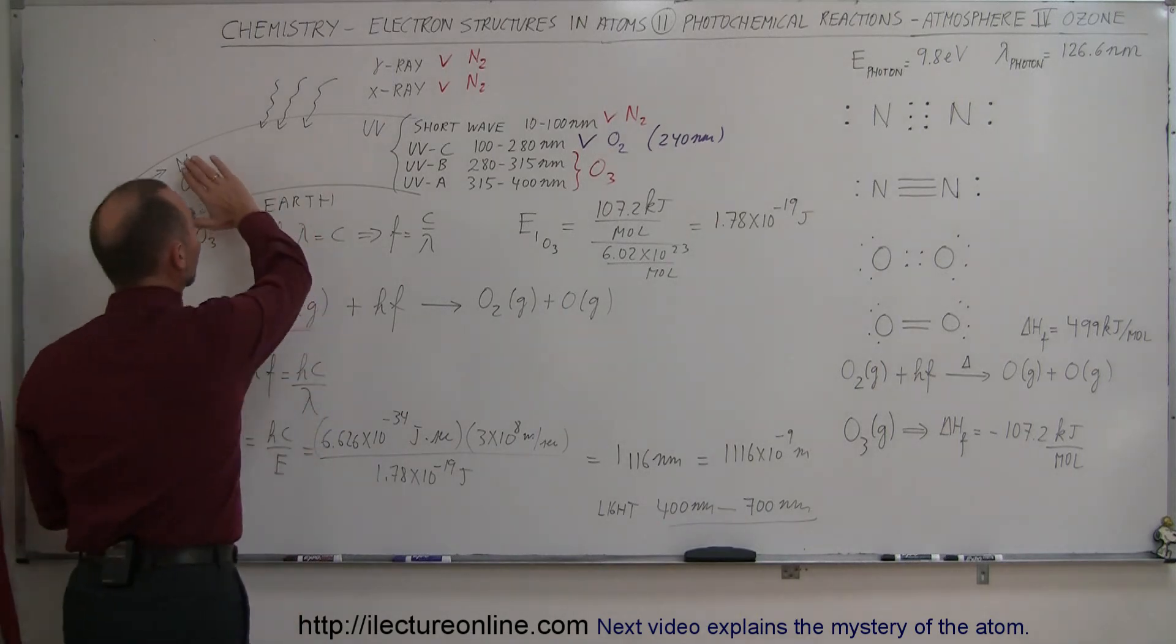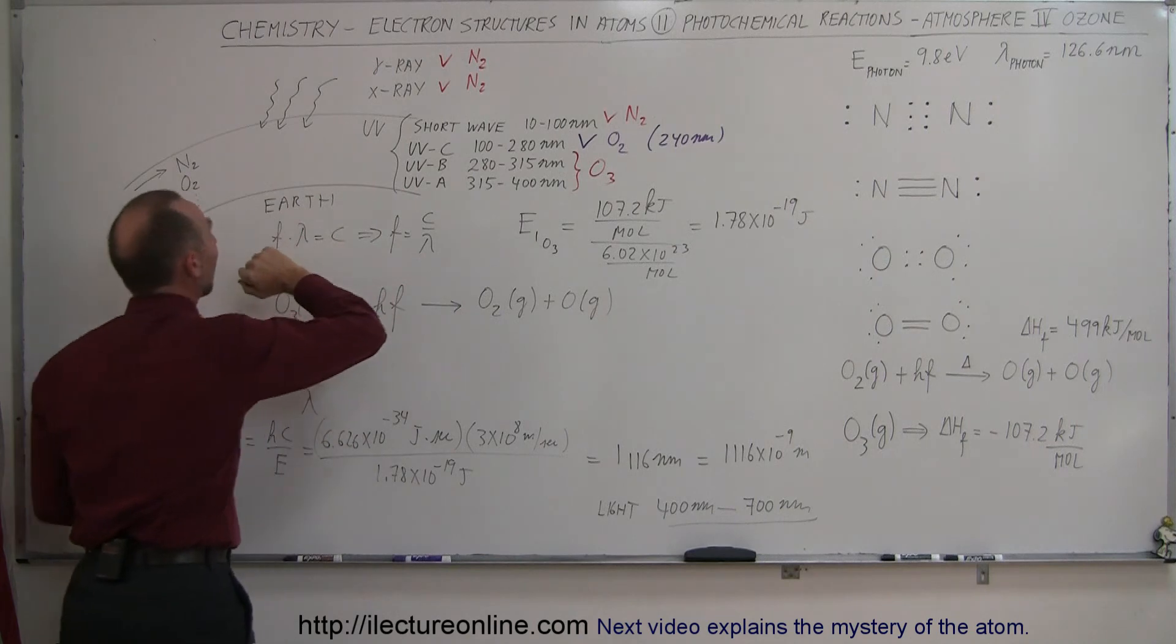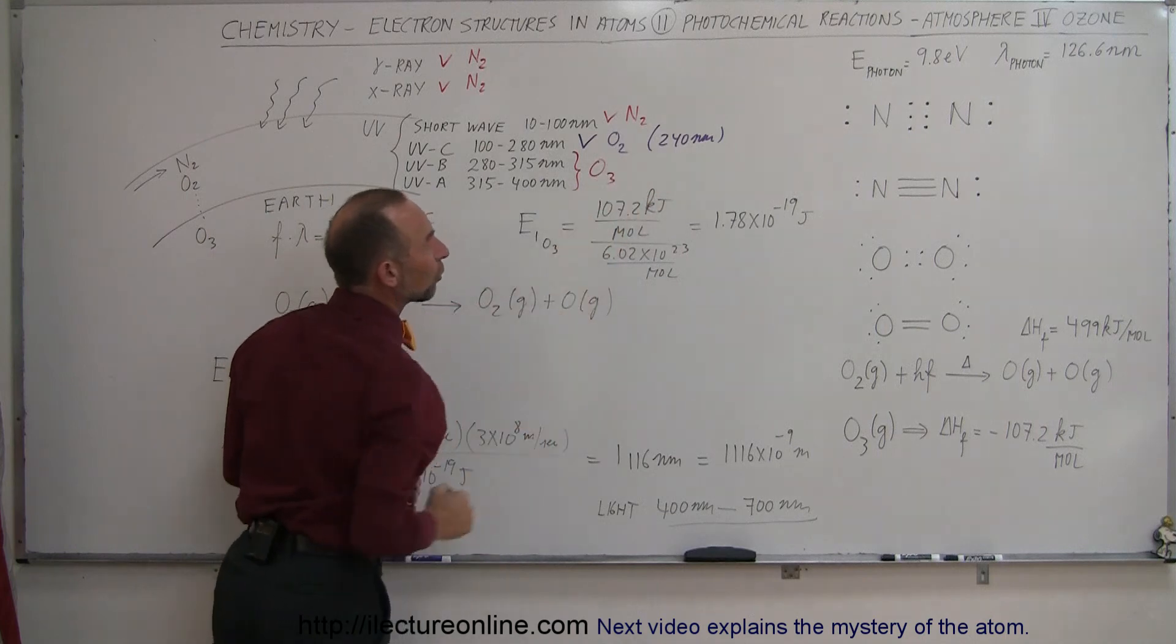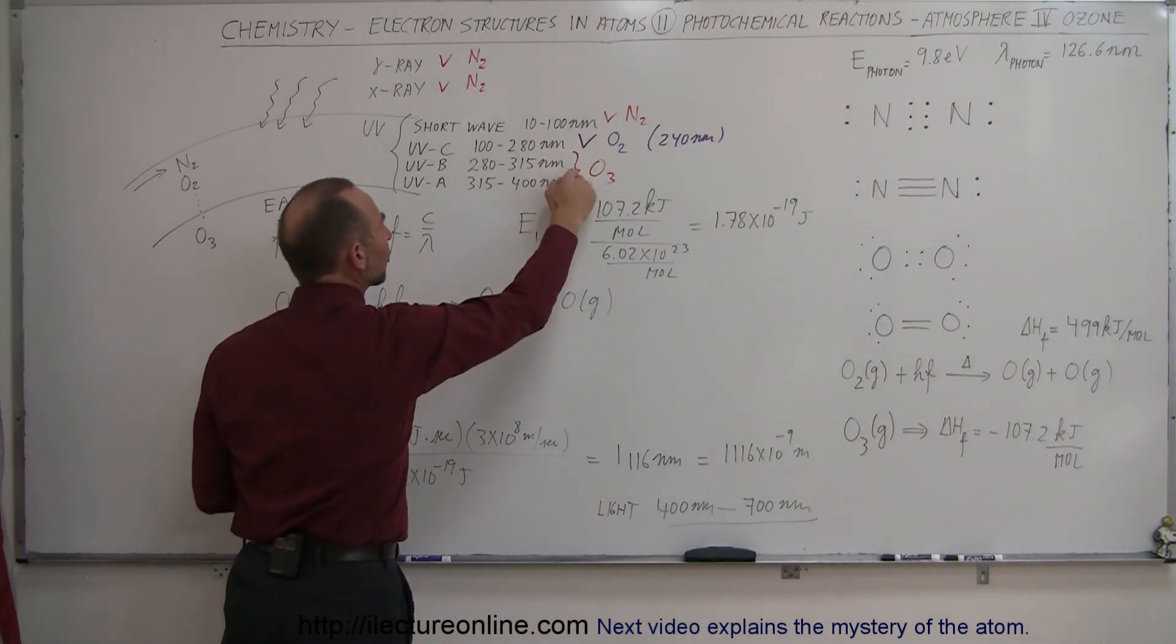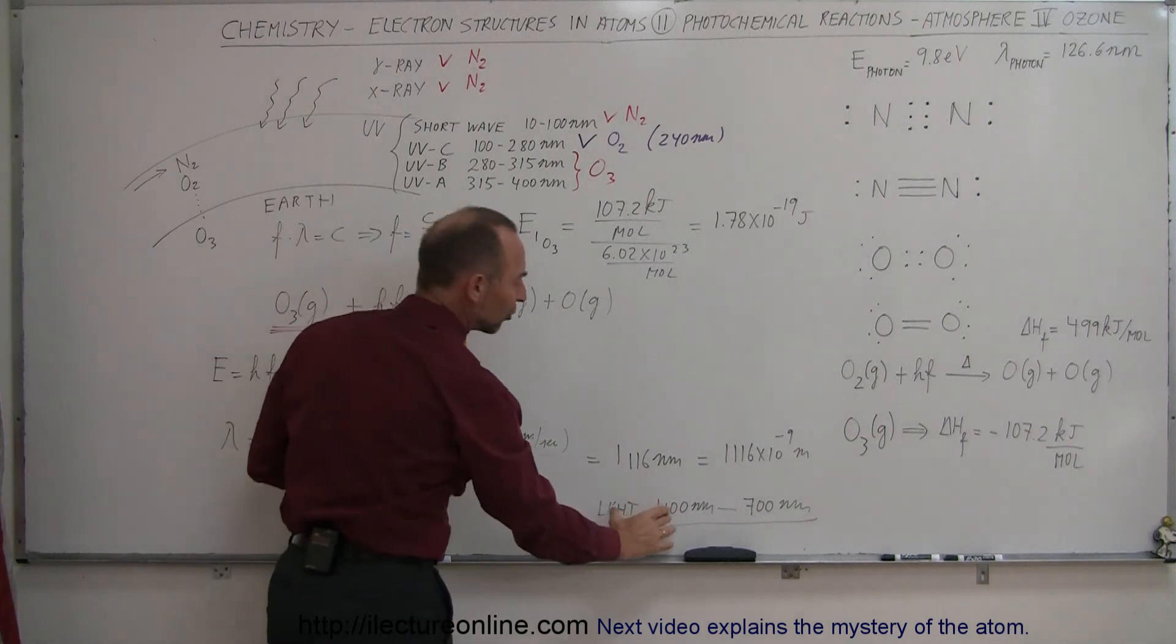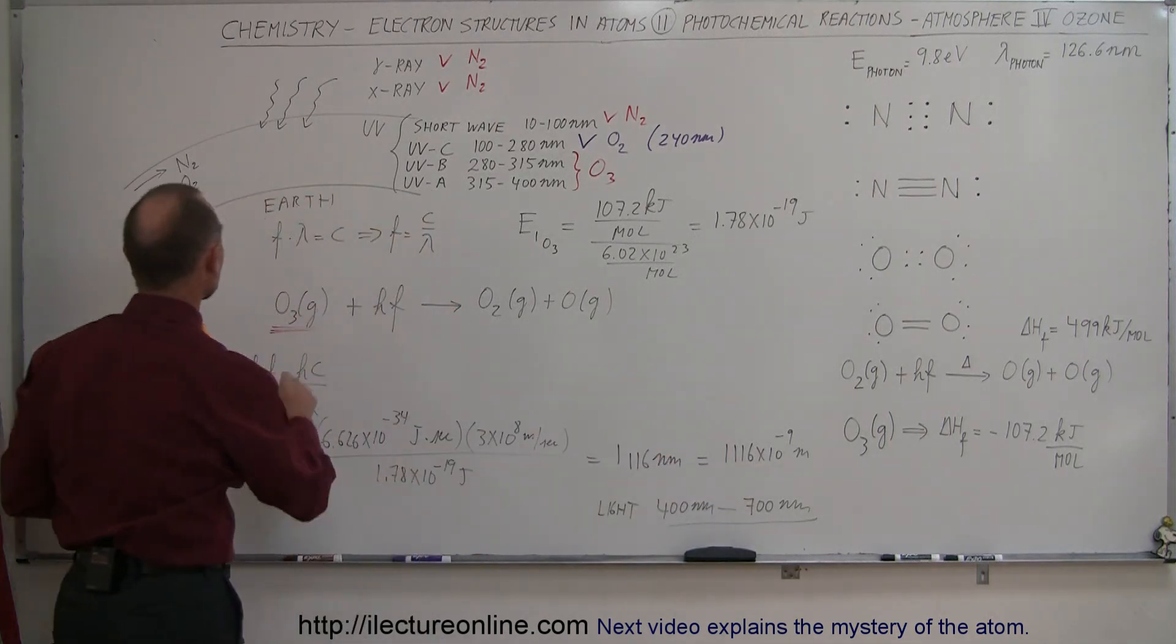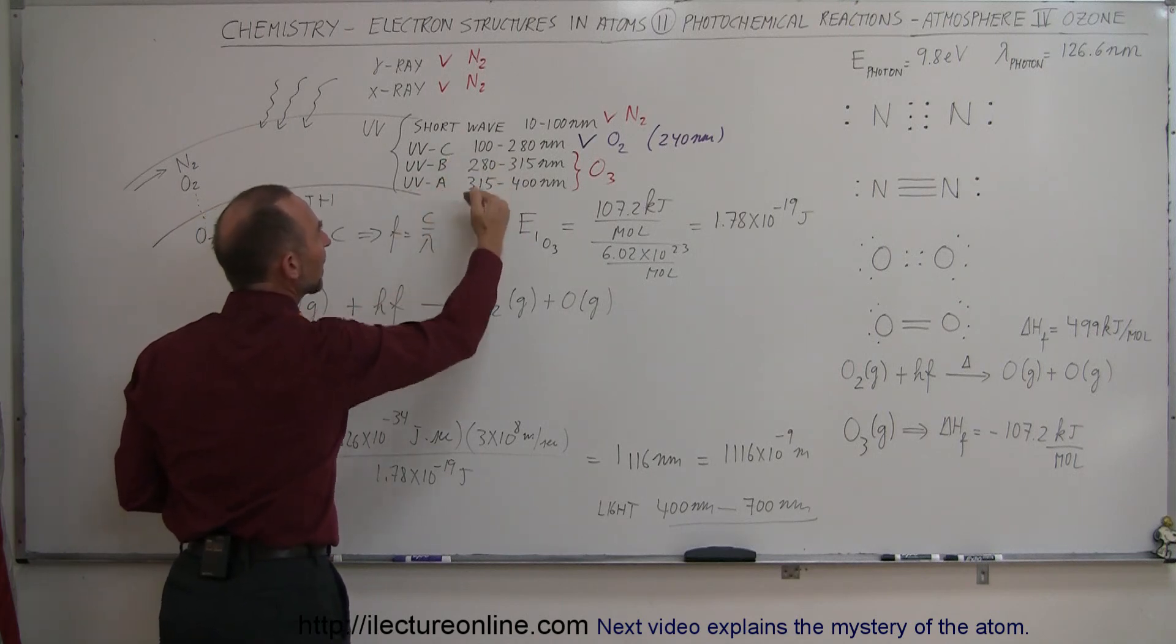Bottom line, the protection of the atmosphere is given by three molecules. Nitrogen absorbs very high energy radiation: X-rays, gamma rays, and very shortwave UV. Diatomic oxygen molecules absorb some UVC radiation, anything down to 240 nanometers. The rest would make it through unless we had ozone molecules, which can absorb radiation all the way up to 1,100 nanometers. Typically, the highest energy photons between 240 and 1,100 nanometers are absorbed by ozone. The vast majority of UVB and most of UVA are absorbed before reaching Earth's surface.